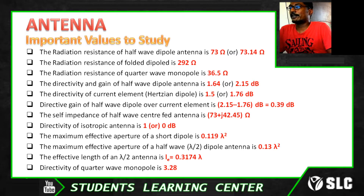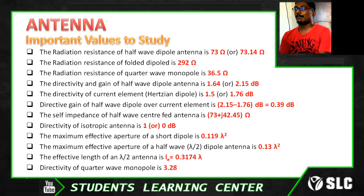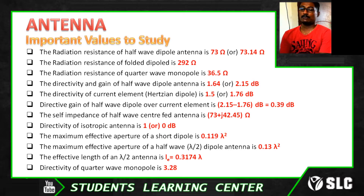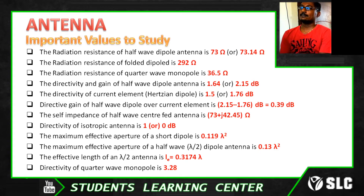Maximum effective aperture of a short dipole is 0.119 lambda square. Maximum effective aperture of a half wave dipole antenna is 0.13 lambda square. The effective length of a lambda by 2 antenna is denoted L subscript E.